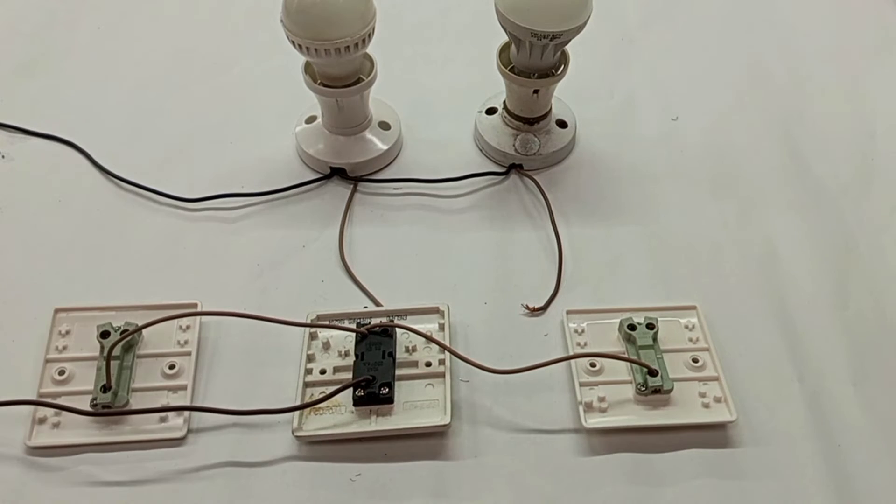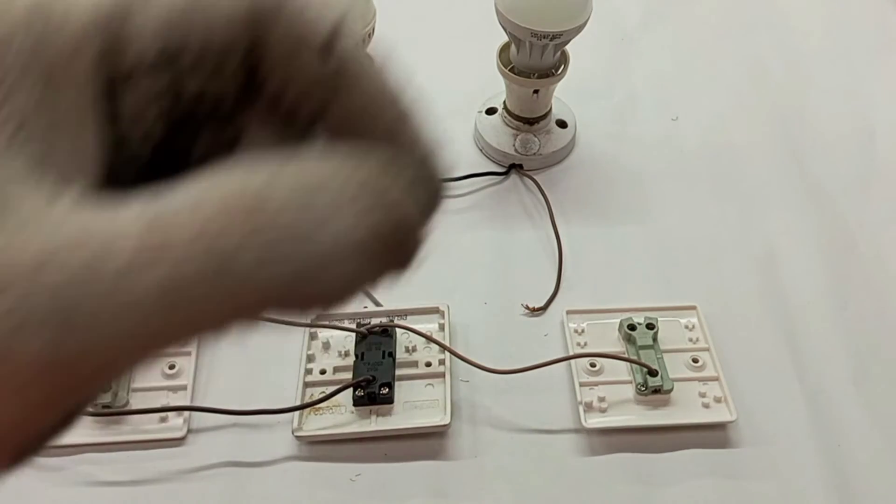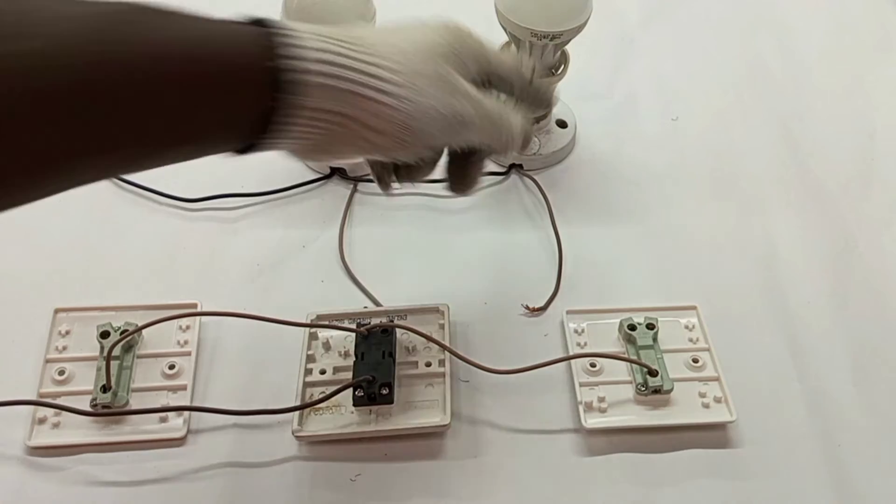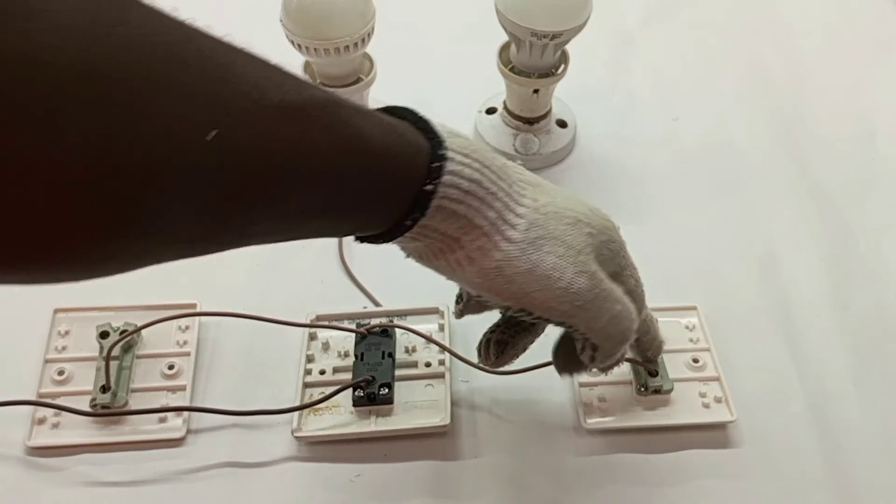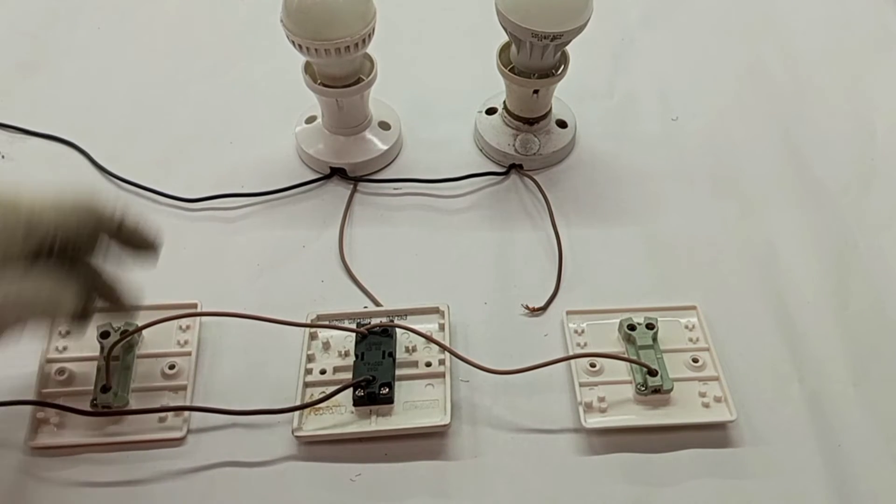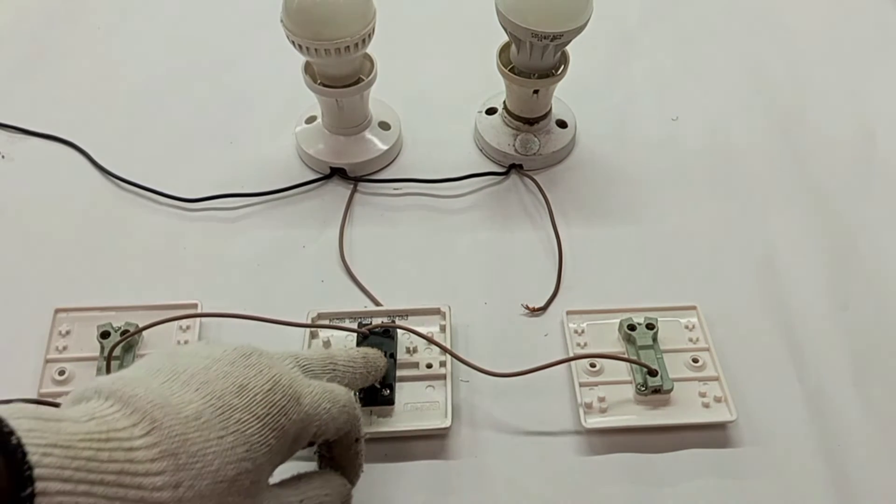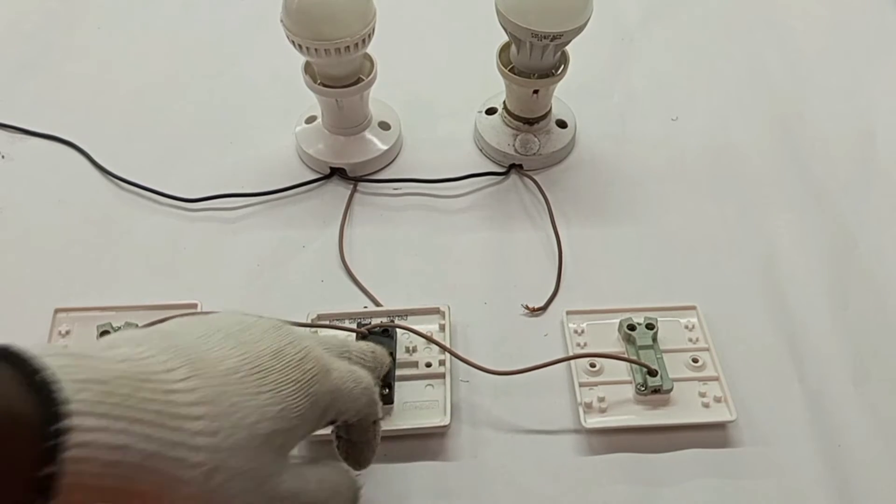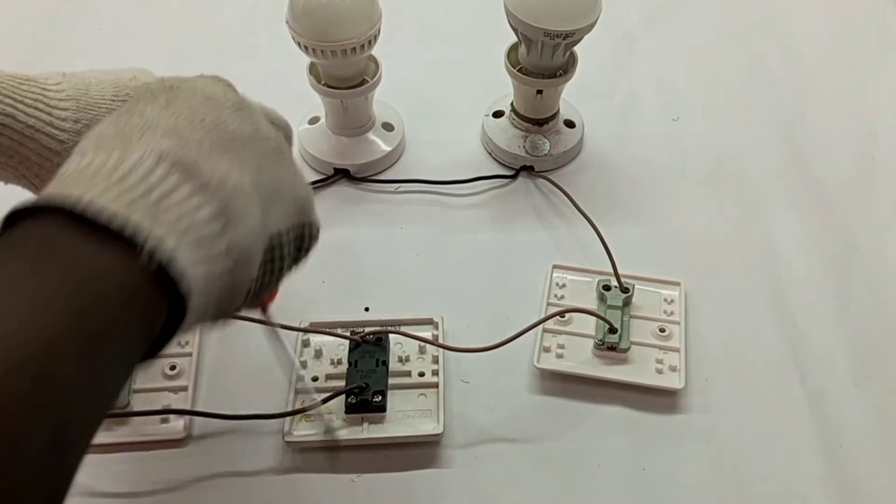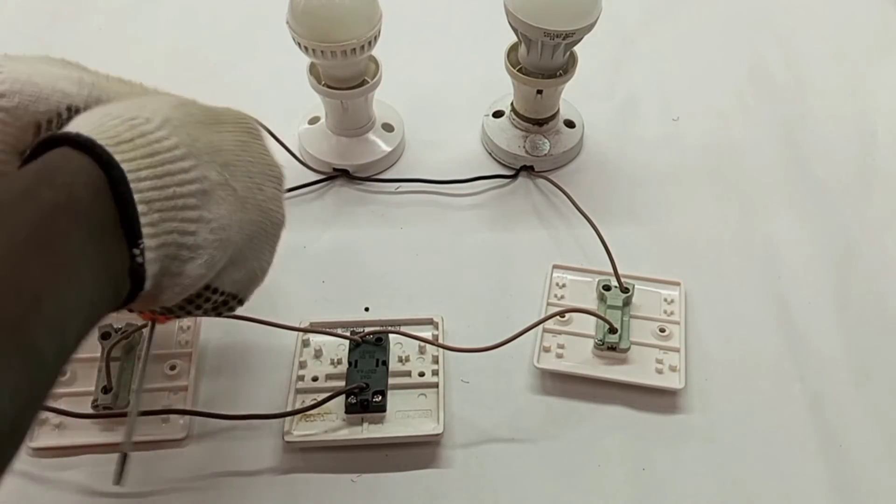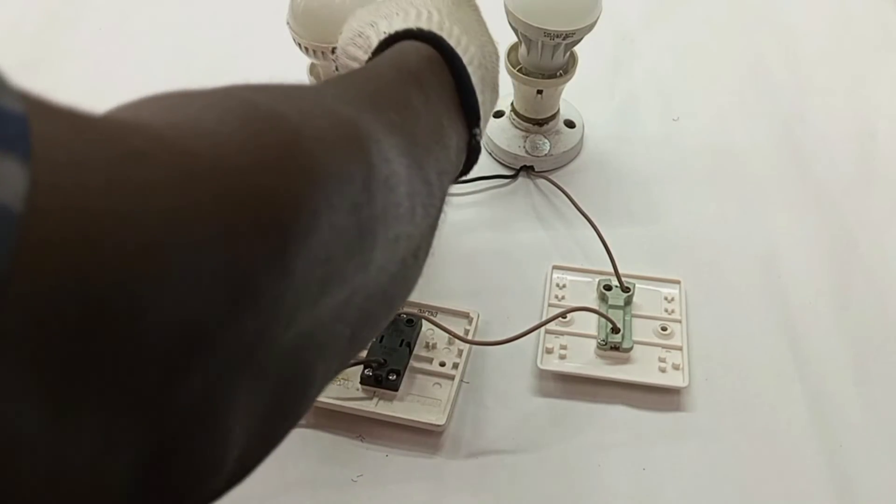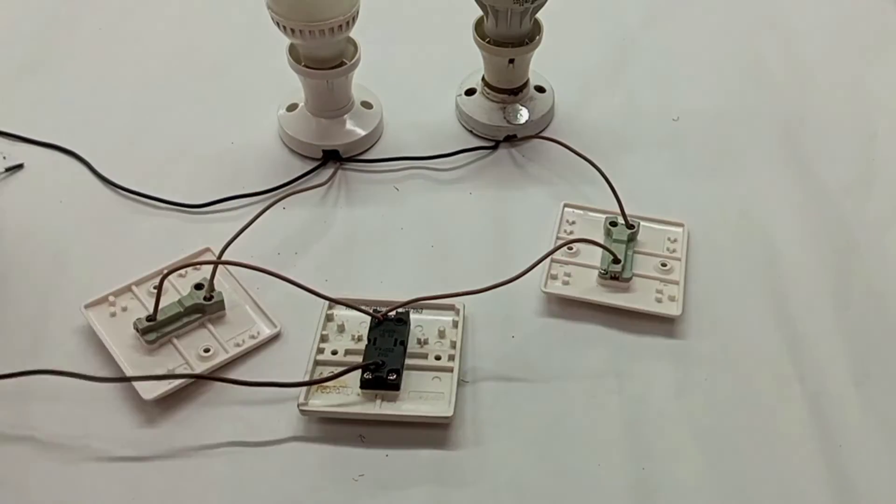The next thing we will do is to connect the switch wires from each of the switches to the lamps. We have this switch that will be controlling this lamp, we have this switch that will be controlling this lamp, and then this one will be our master switch. We connect the switch wire from L2 here. This switch wire will also be taken from L2 here. Our wiring is done.